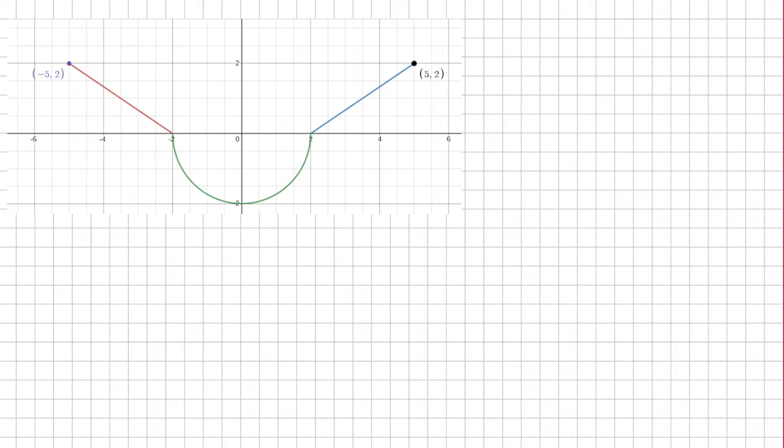We're given the graph of f prime, the derivative of function f, consists of two line segments and a semicircle, as shown in the figure above. We have f of 2 is equal to 1. We want to find what is f of negative 5.